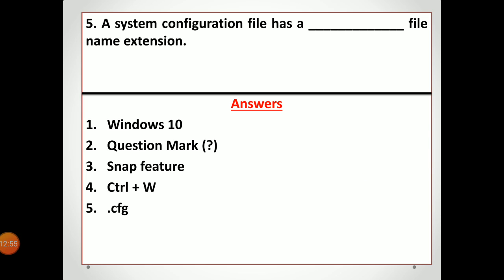Fifth: the file extension for a system configuration file is .cfg — cfg means configuration. So .cfg is the file name extension for a system configuration file.